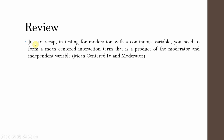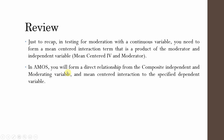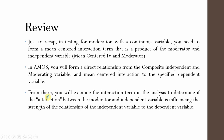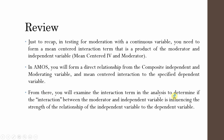To recap: in testing for moderation with a continuous variable, you need to form a mean-centered interaction — the product of the moderator and independent variable. Mean-center your IV and moderator, create the interaction term, then in AMOS form direct relationships from the composite IV, moderating variable, and the mean-centered interaction to the dependent variable. Examine whether the interaction term is significant.